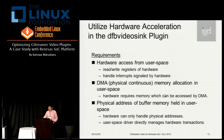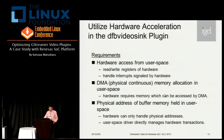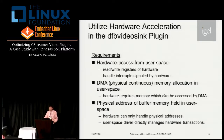Let's move on to the next optimization: utilizing hardware acceleration in DFB video sink. In order to use hardware in a user space plugin, there are requirements we need to meet. The first requirement is hardware access from user space — the user space plugin has to read and write hardware registers and handle interrupts from hardware. The second is DMA memory allocation in user space — hardware can access memory through DMA, so physically contiguous memory may be necessary for buffers. The last requirement is an address issue: hardware can only handle physical addresses of memory, but user space programs usually handle virtual addresses. So if a user space plug-in directly manages hardware, virtual-to-physical address translation in user space must be necessary.